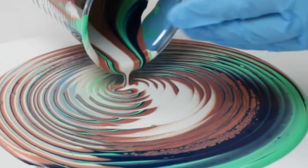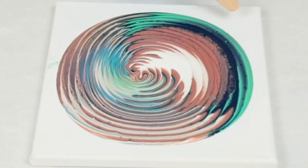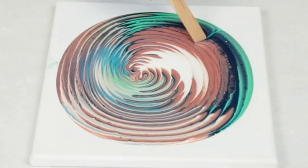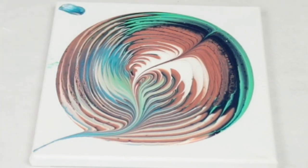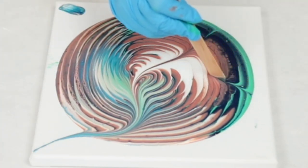Then I pour in the center of the canvas in a circular fashion, which is how you get that tree ring technique. It's named because it looks like tree rings at the end.